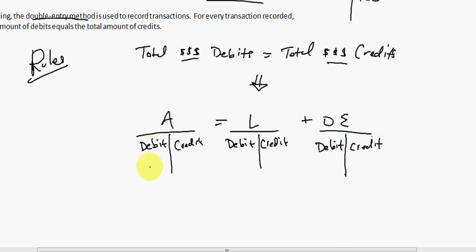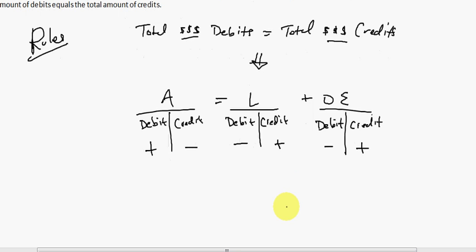Now here's the part that you need to remember. On the asset side, you have plus, minus; liability side, minus, plus; minus, plus for owner's equity. Plus, minus, minus, plus, minus, plus. Just memorize it. Memorize these rules.